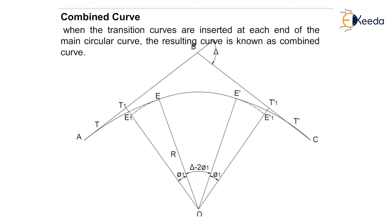As you can see in the figure, the actual circular curve is starting from E1 and ends at E1'. But we take only E and E'. From T to E is a transition curve, and at the end also E' to T' is a transition curve. So when a circular curve combines with two transition curves at the beginning and the end, that is known as combined curve.